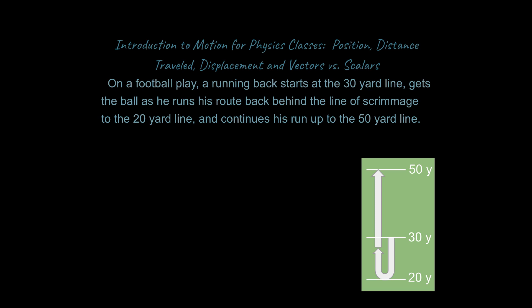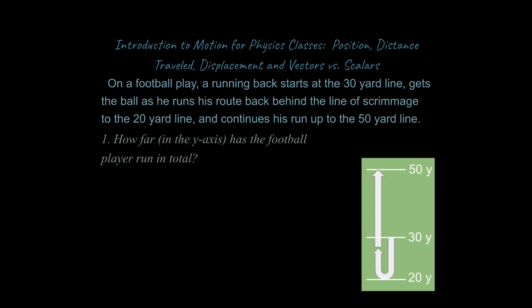Here is the scenario I've created. On a football play, a running back starts at the 30-yard line — he starts right here — gets the ball, runs his route back behind the line of scrimmage to the 20-yard line, and continues his run up to the 50-yard line. The first question is: how far on the y-axis has the football player run in total?